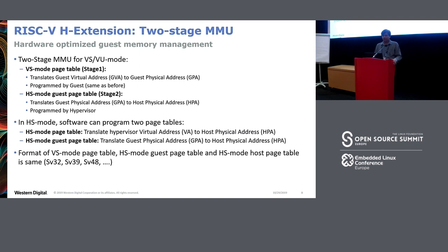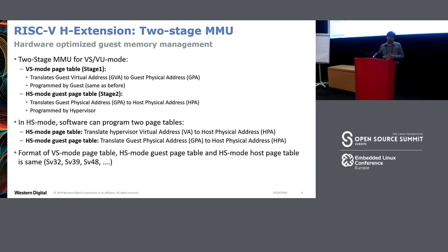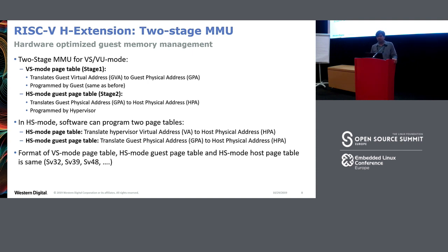Like any architecture with virtualization support, we also have a two-stage MMU in hardware. When running in VS mode, we have the VS mode page table — stage 1 — programmed by the guest itself, translating guest virtual addresses to guest physical addresses. Then we have the HS mode guest page table — stage 2 — programmed by the hypervisor, translating guest physical addresses to host physical addresses. In HS mode, there are two types of page tables: the HS mode page table for the hypervisor itself, and the guest page table — one per VM — translating guest physical addresses to host physical addresses. Importantly, the page table format remains the same across these types, so a lot of code can be reused.